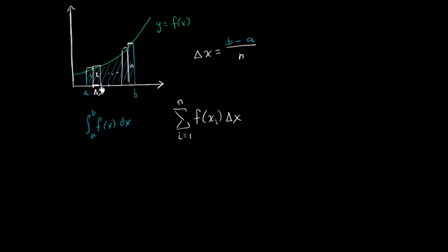So you take x sub two, f of x sub two is that height right there, you multiply it times delta x, you get the area.